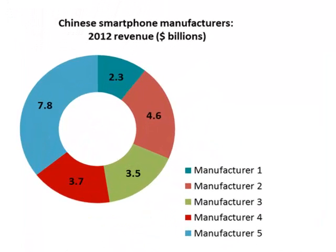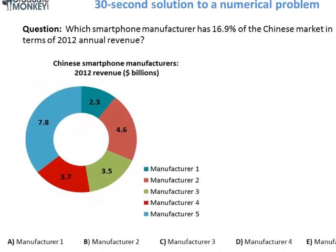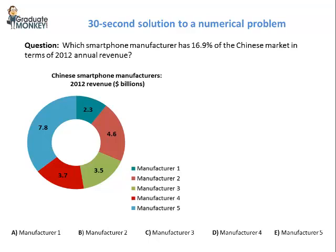Look at the donut chart. It exhibits the revenues of five Chinese smartphone manufacturers. The question is: which smartphone manufacturer has 16.9% of the Chinese market in terms of 2012 annual revenue?